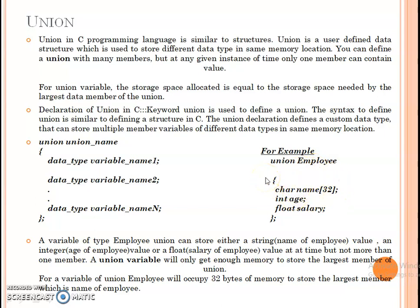At any instance of time, this union can hold only one variable's data — it cannot hold all three variable values simultaneously. So the benefit is that memory utilization is efficient. There are also drawbacks; we will discuss the drawbacks and benefits in the last slide.